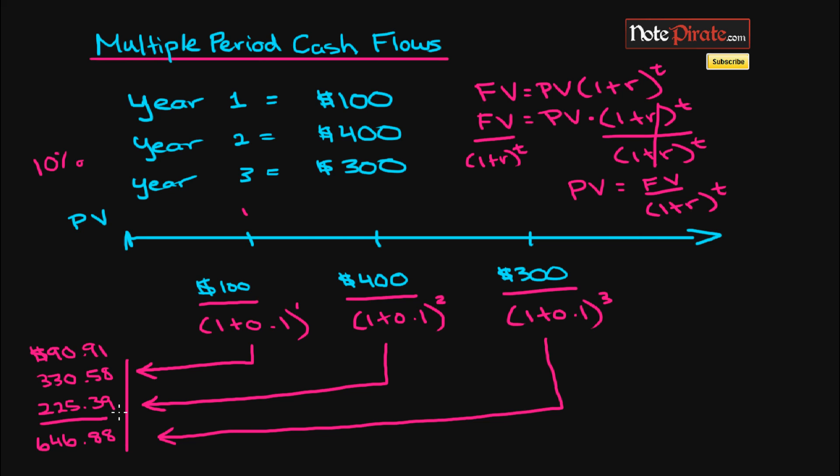So all things aside, if someone were to offer you today, in the present day, $646.89, which one are you going to pick? You're going to pick this one, because they're both converted to the present day. Everything else aside, this provides us with a greater amount of cash, so we would take this.